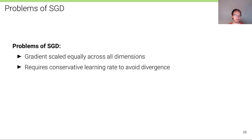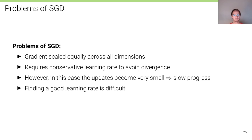However, SGD has problems: gradients are scaled equally across all dimensions, which is not ideal. To avoid divergence we must choose very conservative learning rates, but then updates become very small, leading to very slow progress. Finding a good learning rate is very difficult.